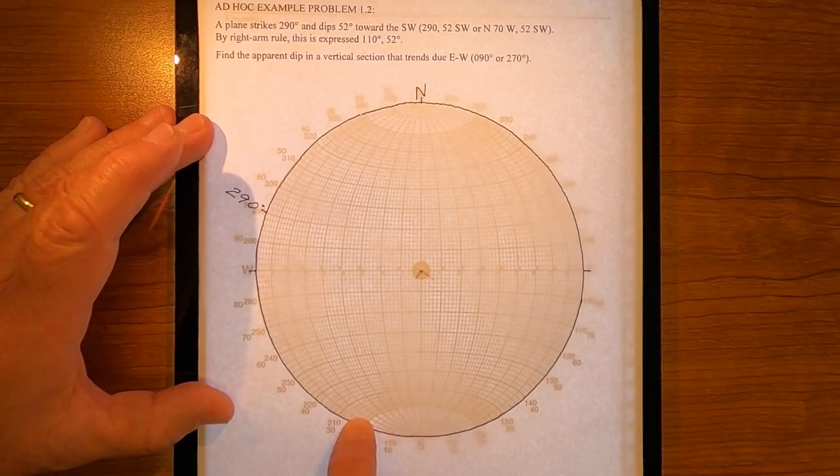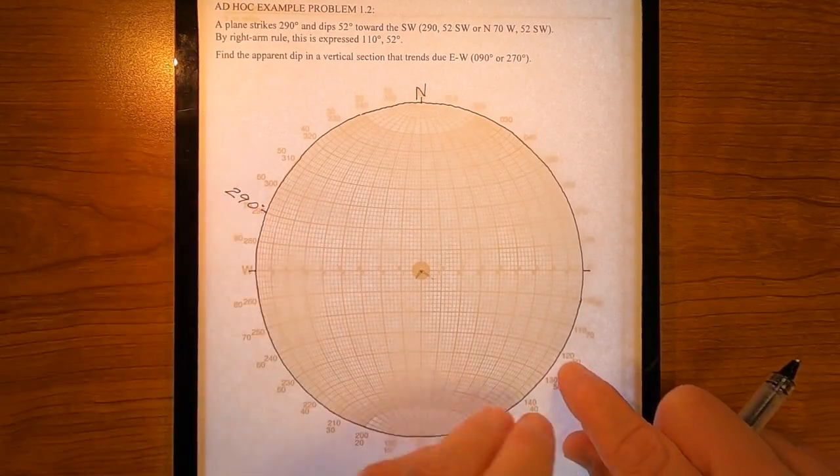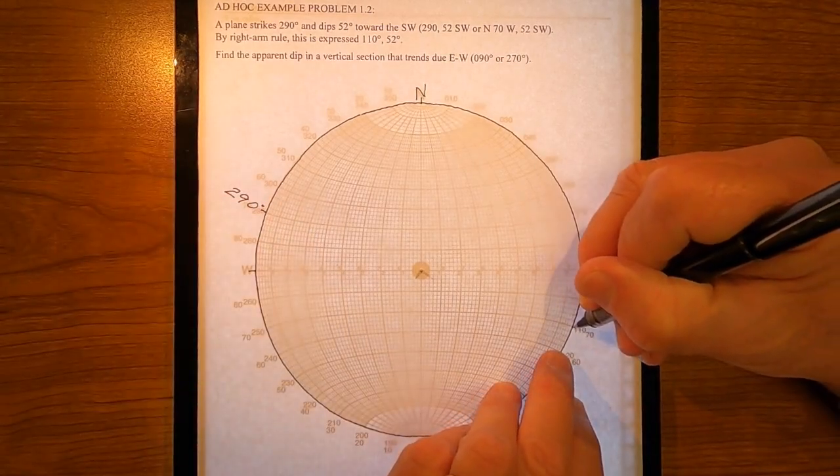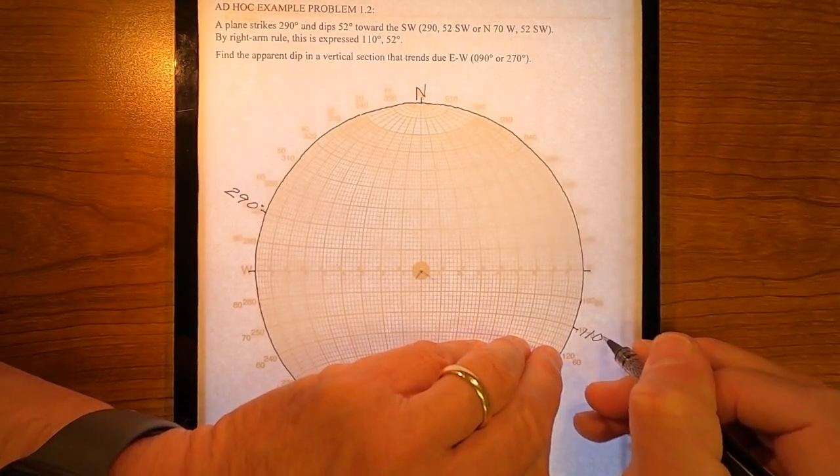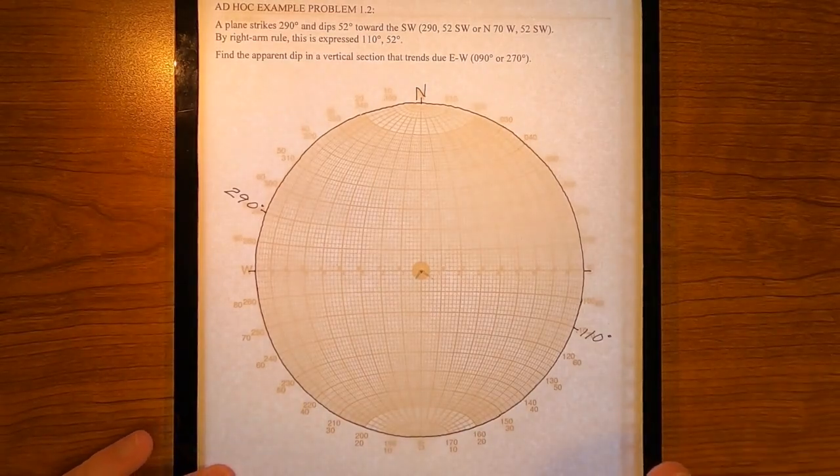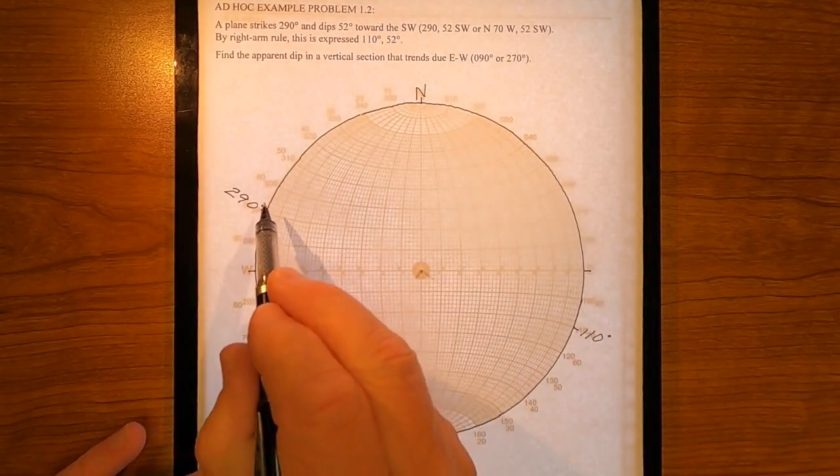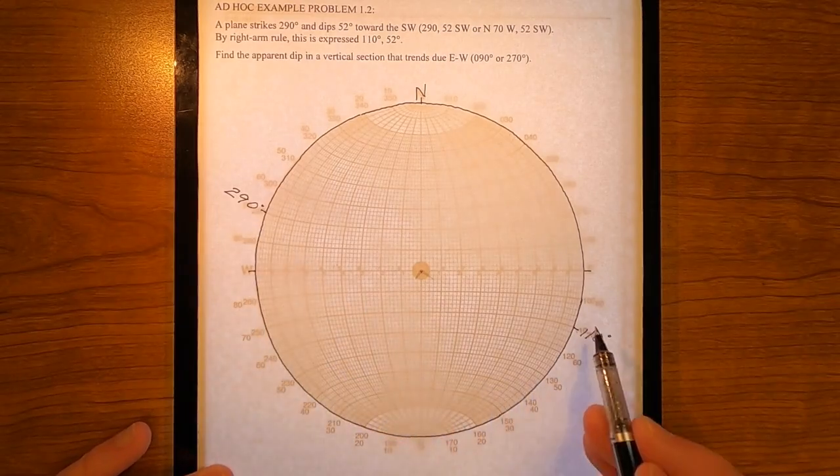What do I do now? I can go ahead and put 110 on here. That is 110. What do I do now? I rotate my overlay, keeping in mind that my great circle needs to be over here.